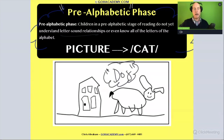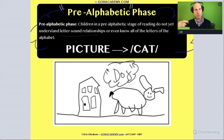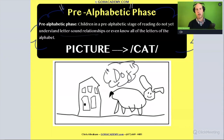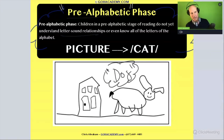A predictable text is one where there's enough repetition that a student can pick up on the story and its patterns just through the way the text is structured and supported with visual cues. We'll talk about those in a moment. This is that first stage.